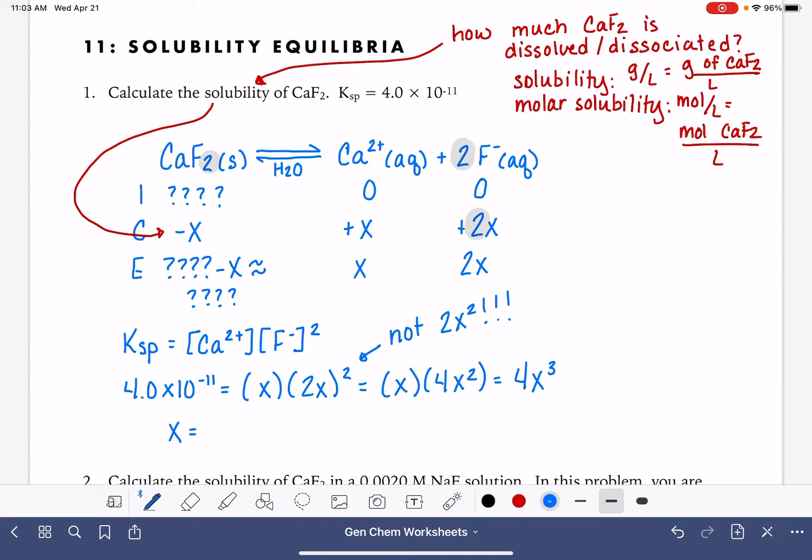Now, let's go ahead and solve for x. I'm going to go 4 times 10 to the -11, divided by 4. And then I'm going to take the cube root of that. And my x is 2.15 times 10 to the -4. Now, the ICE table default unit is molarity. So that means that this is in units of moles per liter, specifically moles of CaF2 per liter. And since we're being asked to calculate solubility, which is in units of grams per liter, we just need to do one last conversion right here, where we're going to convert moles of calcium fluoride into grams. We'll do this using the molecular weight of calcium fluoride, which is 78 grams per mole. Those mole units are going to cancel. And this is now 1.68 times 10 to the -2 grams per liter.